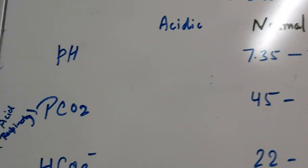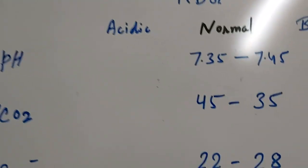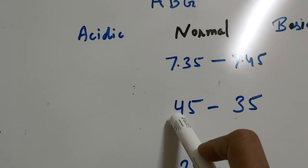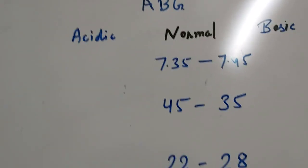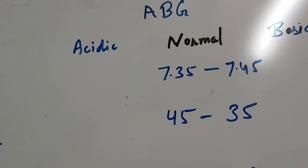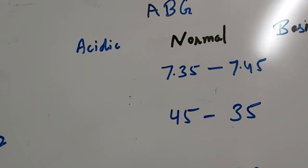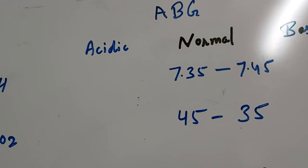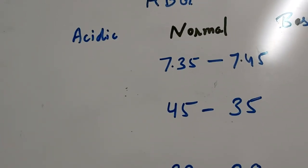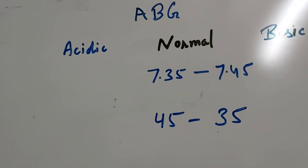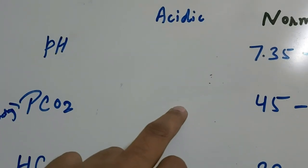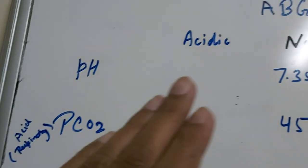Similar is the condition with the partial pressure of carbon dioxide, where the normal range is from 35 to 45. But the partial pressure of carbon dioxide ultimately breaks down, leading to formation of acid. So it denotes the respiratory thing. If it is greater than 45, then the condition is acidic and the condition will be respiratory acidosis.